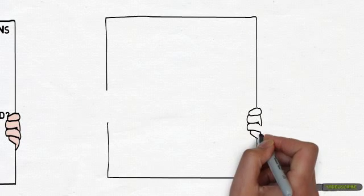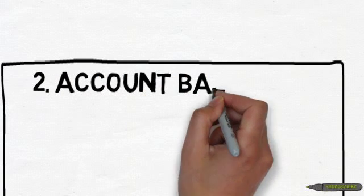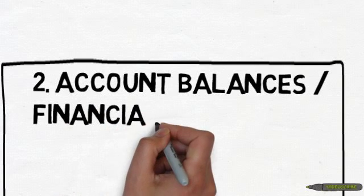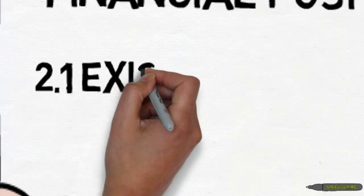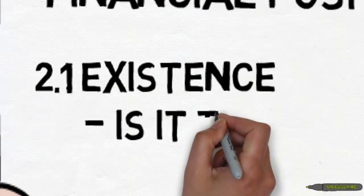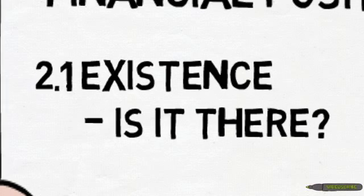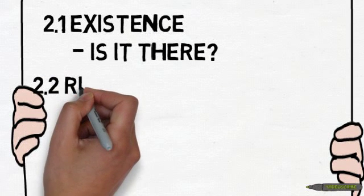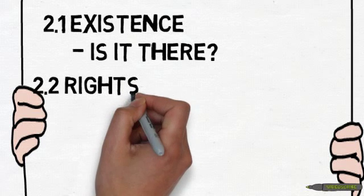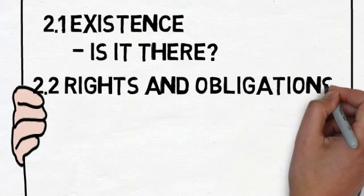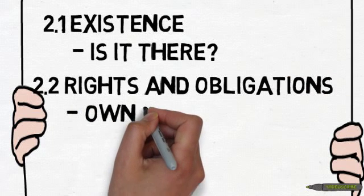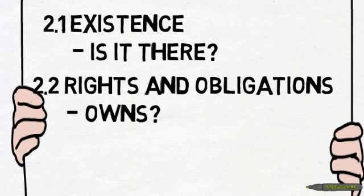The next group of assertions all relate to assertions that impact account balances or the balance sheet or the statement of financial position at a period end. Existence: all the assets, liabilities, and other interests that appear in the financial statements actually exist. Rights and obligations: the assets presented in the financial statements are actually assets for which the entity holds the ownership right or has all the necessary controls to the rights of use of the asset. Similarly, the liabilities recorded are actually the obligations of the entity.